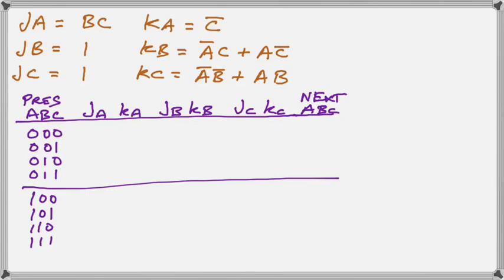We arrange our states on the left in the normal order, 0 to 7. Now we're going to fill in the columns of the input functions.